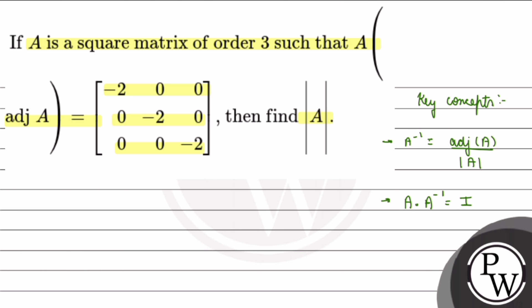So let's see how the question is going to be solved. First of all, I will write A inverse is equal to adjoint of A divided by determinant of A.